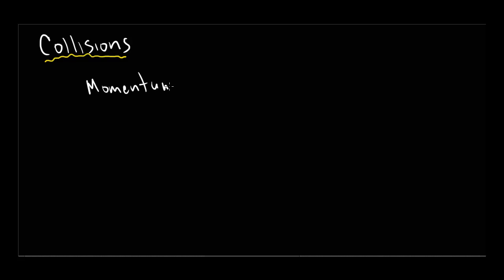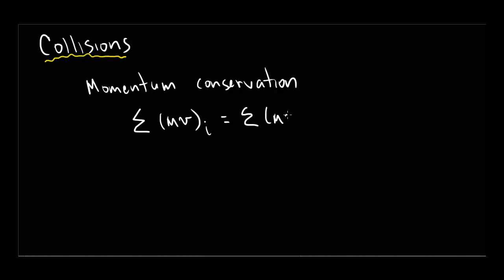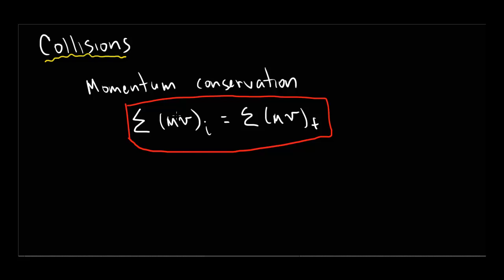Let's make sure that we remember momentum conservation. The sum of the momenta initially has to equal the sum of the momenta at the end. This applies to all cases. If you take all of the individual pieces at the beginning and add up their individual momenta, the total momentum at the beginning has to equal the sum of all their momenta at the end. Momentum can't go anywhere — it can't disappear, it can't come out of nowhere — it has to be conserved.